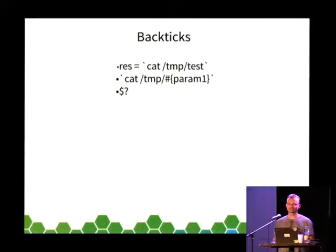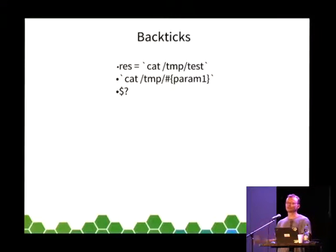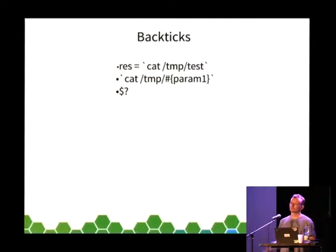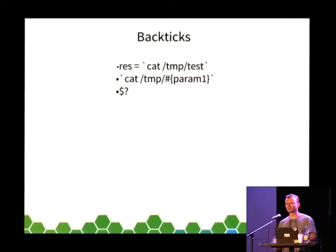There are libraries like shell_escape that take a string and escape it, but even a single place where you forget to escape is a security problem. So backticks are not secure by default. Also, errors are checked by a global variable — dollar question mark — and you need to manually check the exit status and react to it. If you forget to check it, you can silently ignore errors and have bigger problems later. We prefer to fail quickly if something goes wrong.